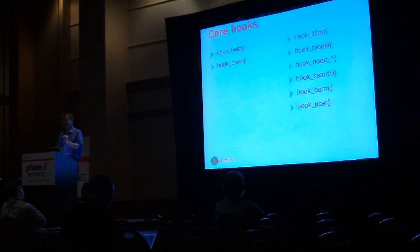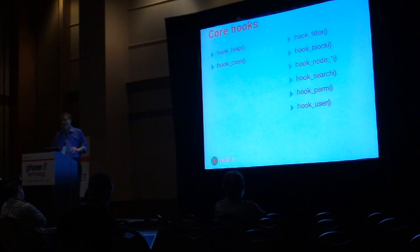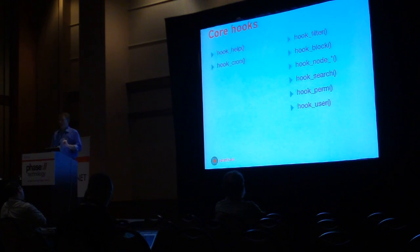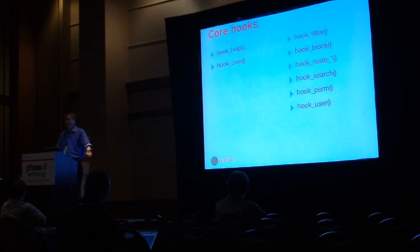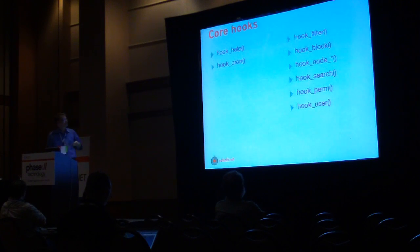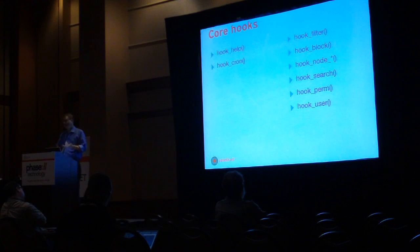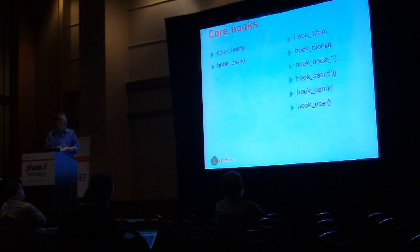Core hooks. I promised I would give you this data. I have two lists here. The list on the left are the core hooks that have not changed their function signature at all. Originally I thought there was only one hook, but hook_cron did not change at all either. There is a cron.php and it fires hook_cron, which is fascinating. These other hooks are there but have changed either in their function name or in their function signature a little bit.